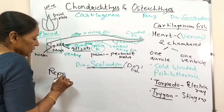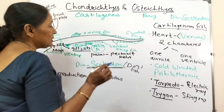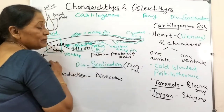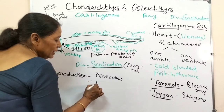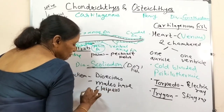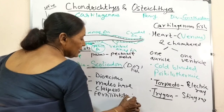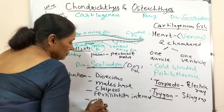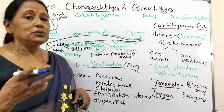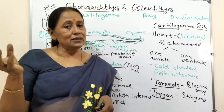Regarding reproduction: they are dioecious - sexes are separate. Males have claspers in their pelvic fin by which they hold the female. Fertilization is internal and many of them are viviparous - they give birth to young ones. You might think all fishes only lay eggs, but that is the case for bony fishes.